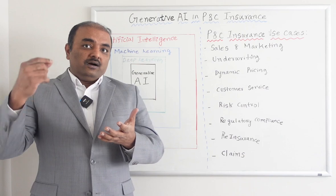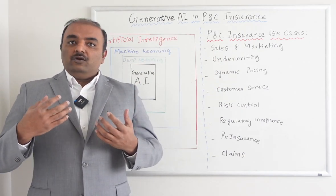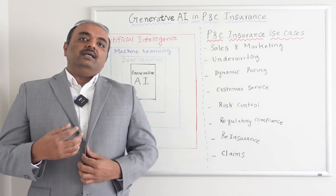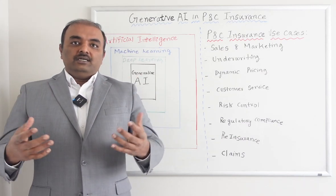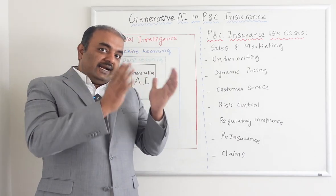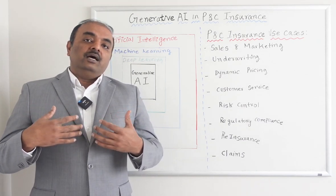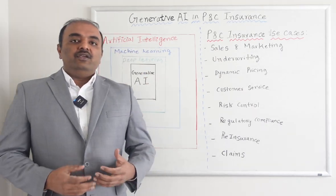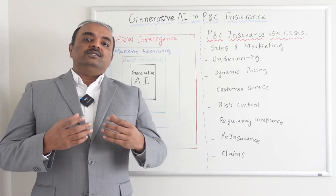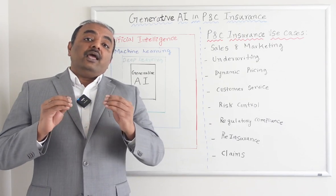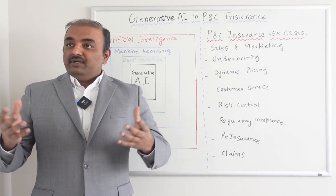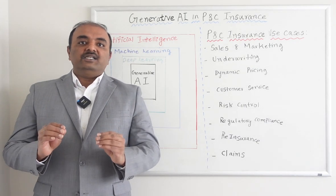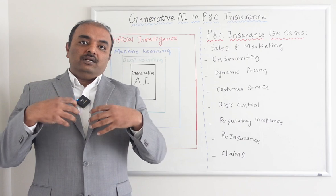Think of it like an artist: a drawing artist looks at multiple images — say, hundreds of family photos — and then comes up with a unique new picture based on what he has seen. Similarly, Generative AI is fed a lot of data, and once it has the data and algorithms, it can generate new content not previously in the market. In short, it generates content based on historical data it has learned and develops reasoning capacity.